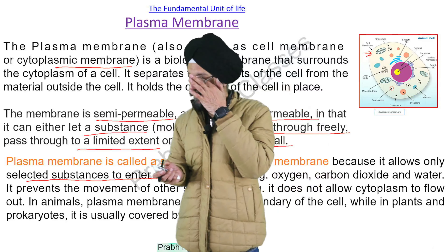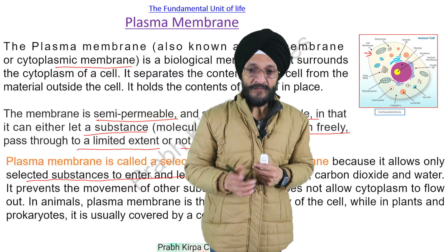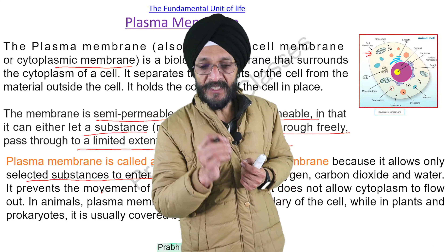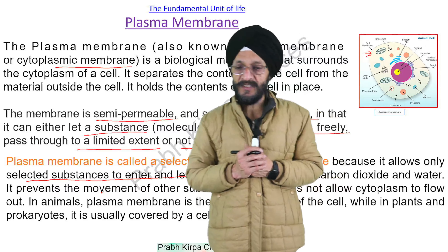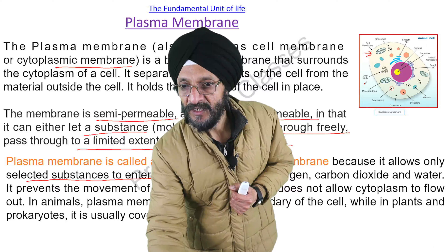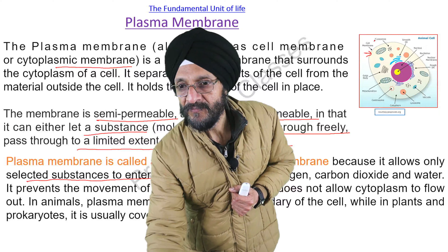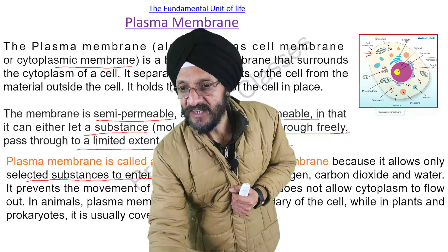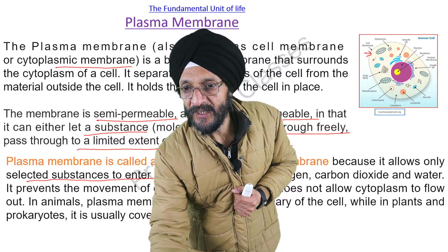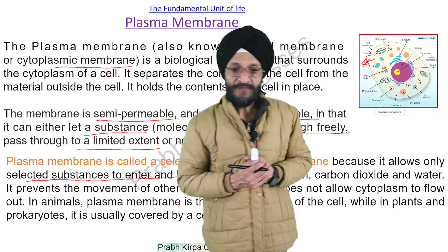Examples of substances allowed through are oxygen, carbon dioxide, and water. The plasma membrane prevents the movement of other substances and does not allow the cytoplasm to move out of the cell. All of the contents inside the cell constitute the cytoplasm.